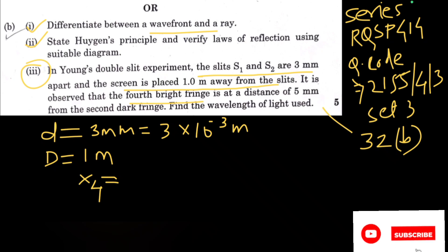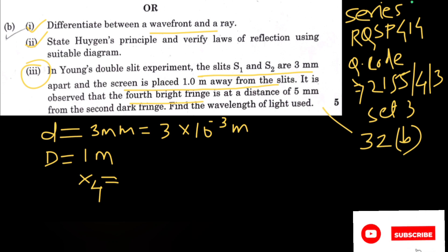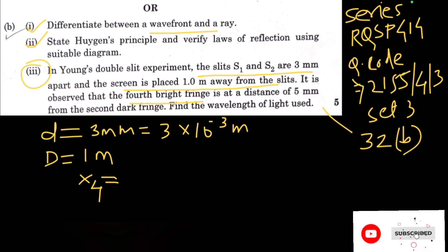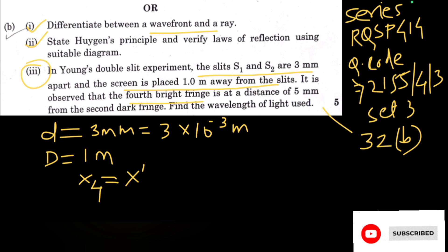In the interference pattern, we get successive bands: central maxima, then a dark band, then a bright band, then dark, then bright, and so on. From the given question, the fourth bright fringe will obviously be at a higher level than the second dark fringe.